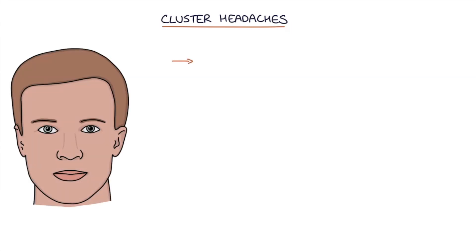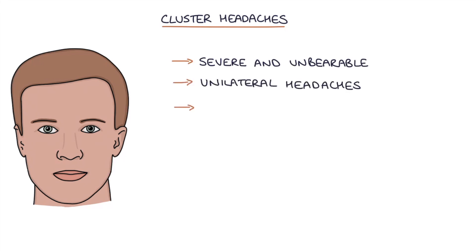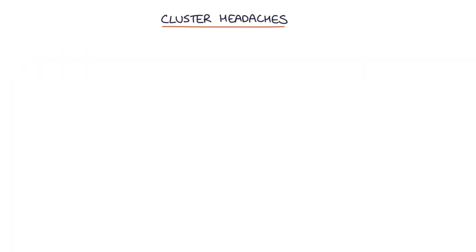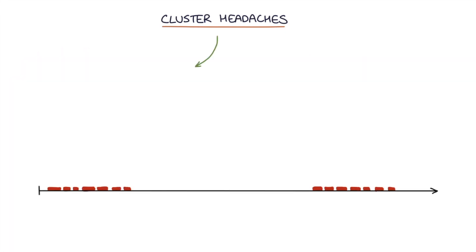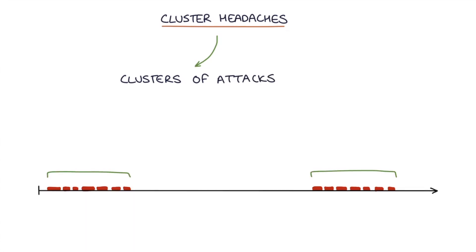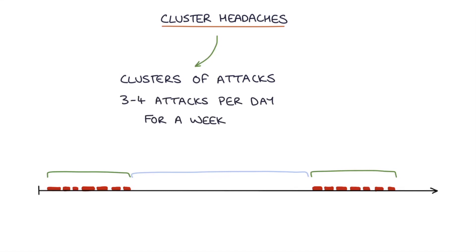Cluster headaches cause severe and unbearable unilateral headaches, usually around the eye. They're called cluster headaches because they come in clusters of attacks and then disappear for a while. For example, a patient might have three to four attacks a day for a week or month, followed by a pain-free period lasting one to two years.